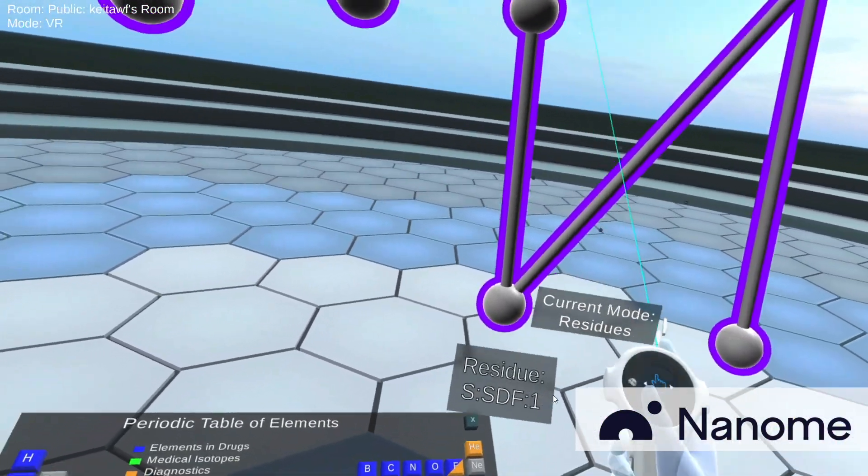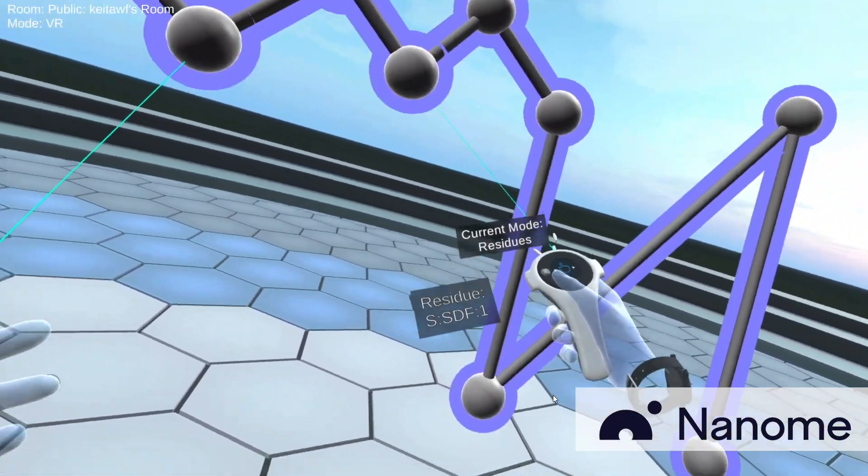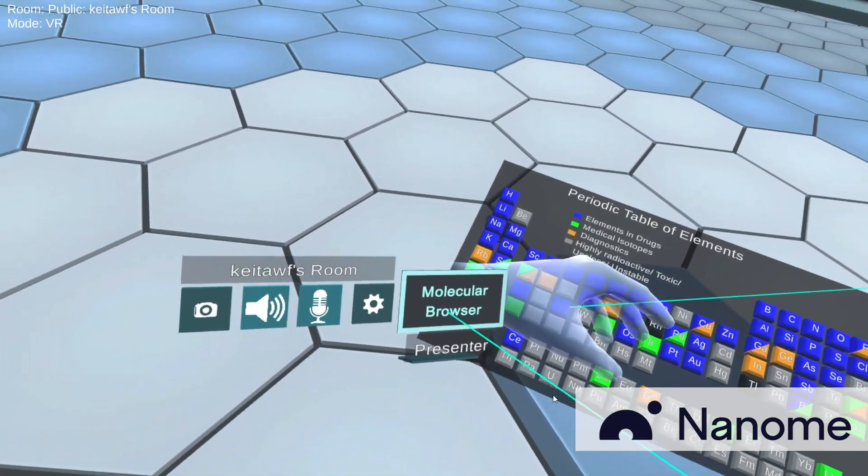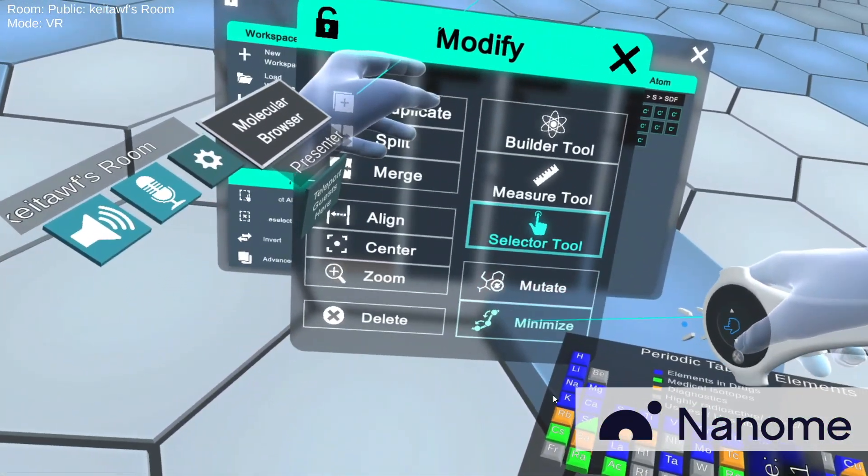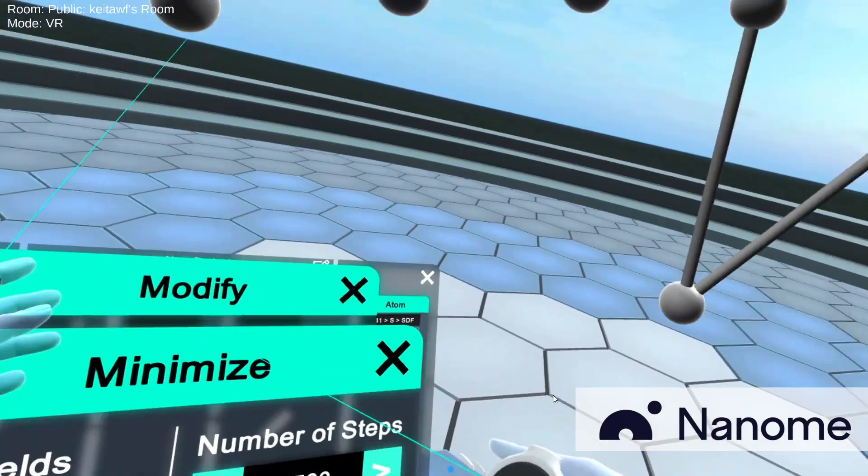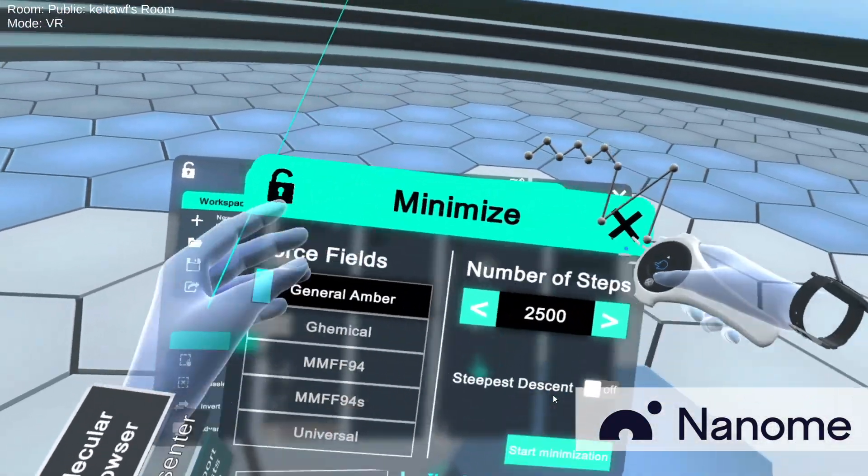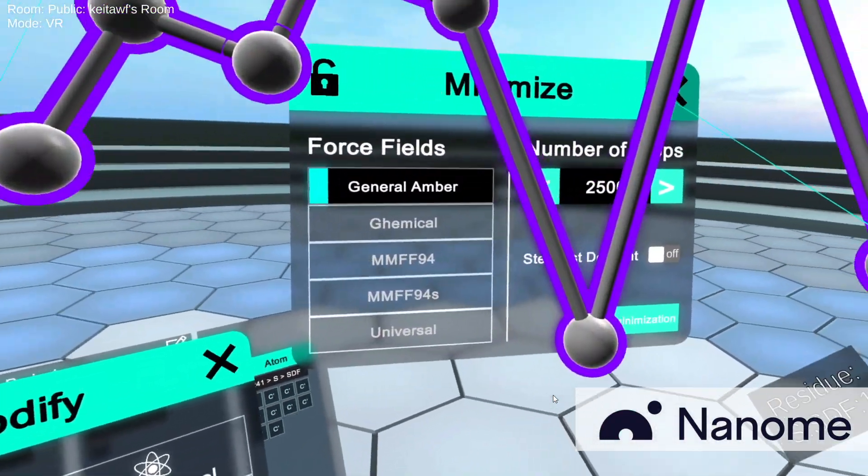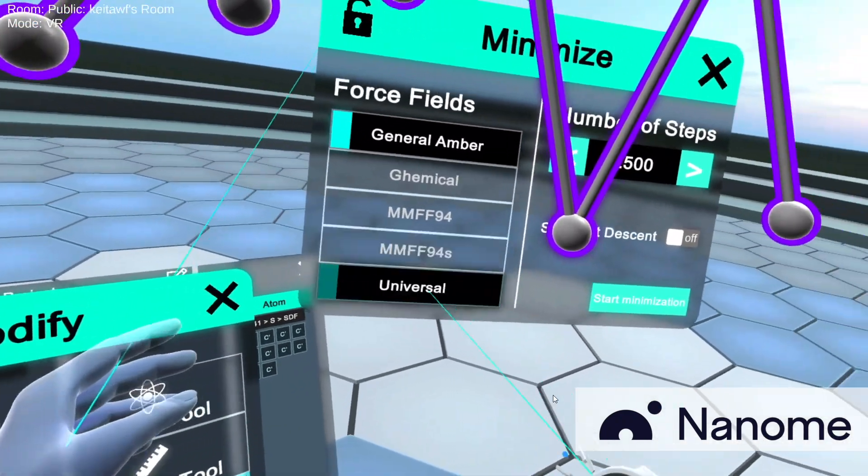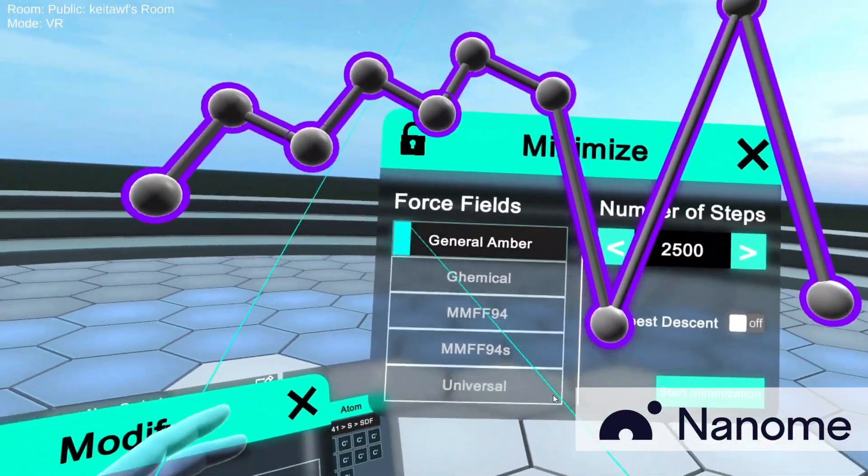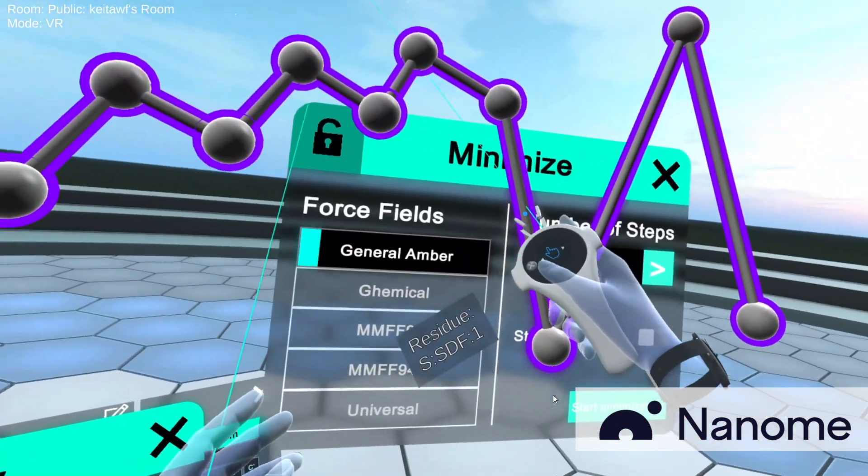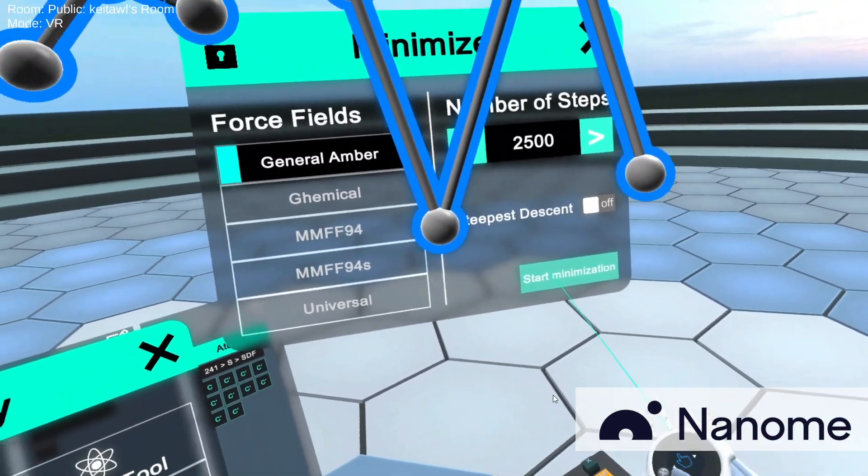So what we want to do is switch to the selector tool, select it, and go ahead and choose modify, minimize, and bring up your minimize menu. So this way we can see the minimize menu with the molecule. So you want to select it first and then click on start minimization.